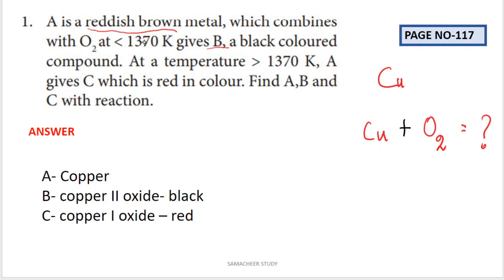At a temperature greater than 1370 Kelvin, A gives C which is red in color. Find A, B, and C with reaction.